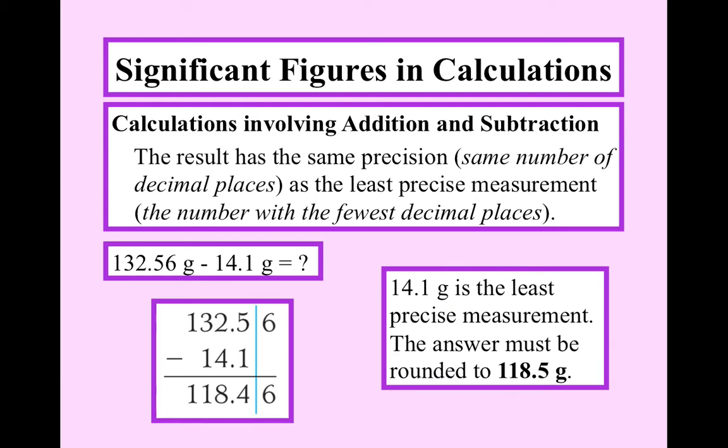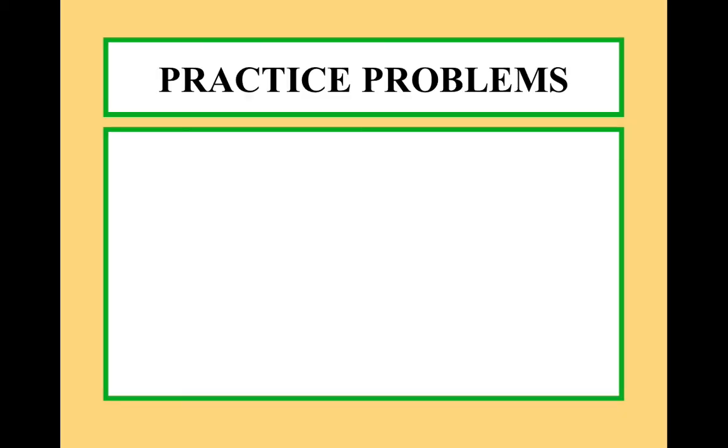Now, notice this is different from multiplication and division. If we were doing multiplication, our answer would be, I'm sorry, not decimal places, would be three significant figures. But notice we have four significant figures here. But with addition and subtraction, instead, we are only looking at decimal places. So, our answer must be rounded to the first decimal place.